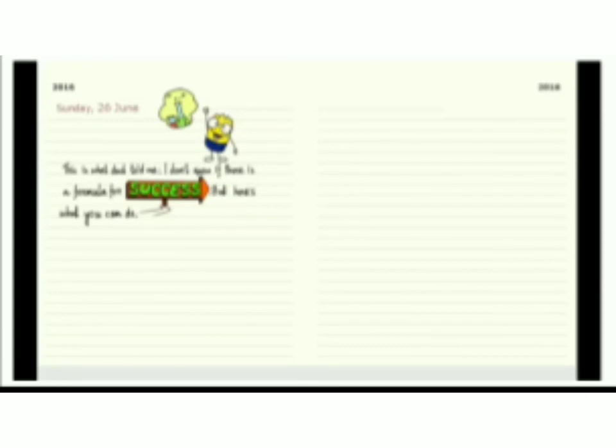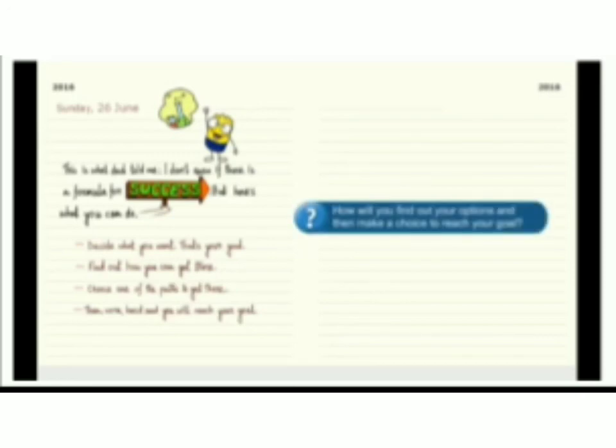Sunday, 26th June. This is what dad told me: I don't know if there is a formula for success, but here is what you can do. Decide what you want. That's your goal. Find out how you can get there. Choose one of the paths to get there. Then work hard and you will reach your goal. How will you find out your options? And then make a choice to reach your goal.